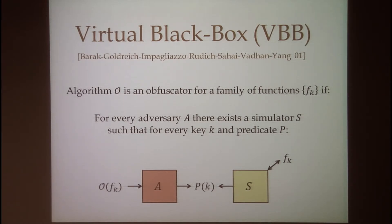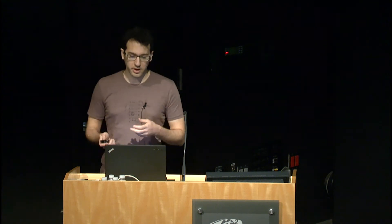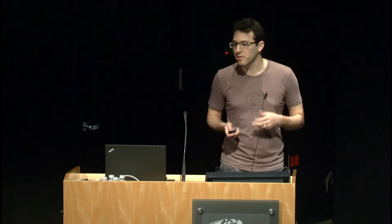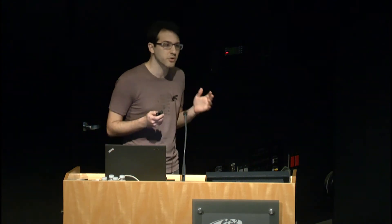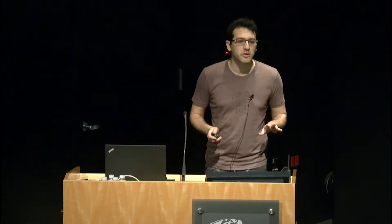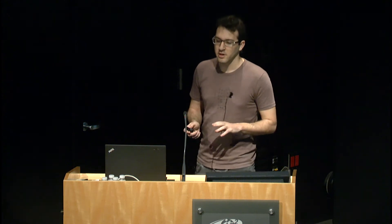The notion of Virtual Black Box is indeed extremely useful, but it turns out that it's not always achievable. Barak et al. showed that there exist concrete function families that cannot be VBB obfuscated, and their impossibility result is even stronger in the sense that even if we restrict ourselves to specific applications like obfuscating encryption or signature algorithms, and even if we only consider algorithms in very low complexity classes, VBB obfuscation is still impossible.